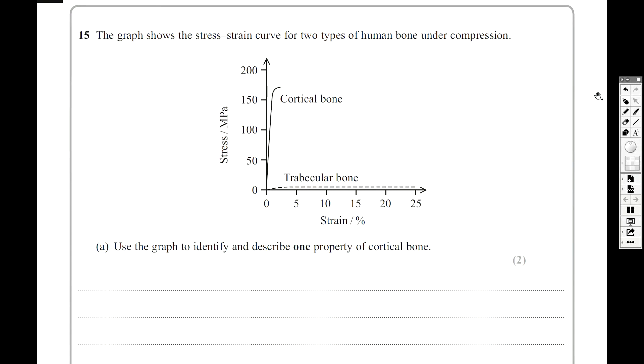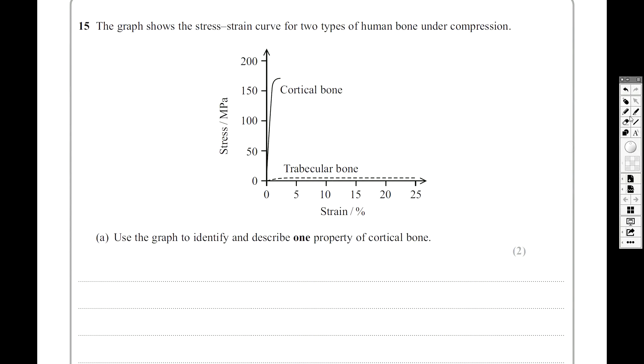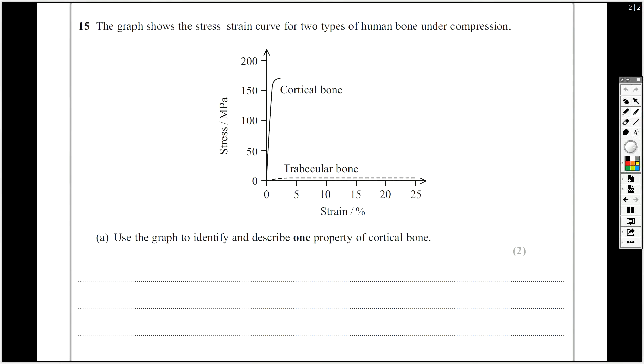So this is question 15 on this LXL unit 1 paper. You can see straight away this question is about Young modulus because you're given a stress-strain graph. Stress over strain, that's Young modulus. And it's about two types of human bone under compression, which means they're being squashed.